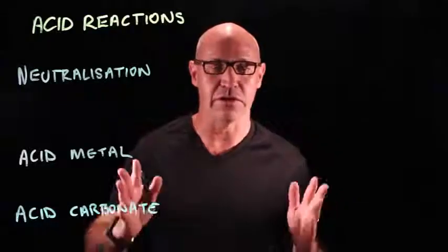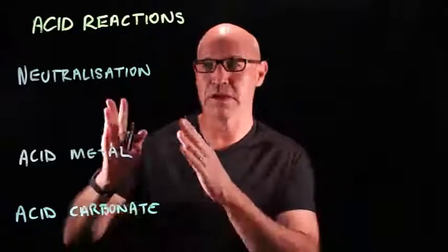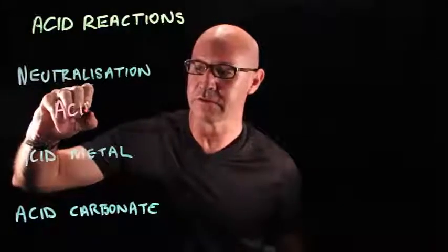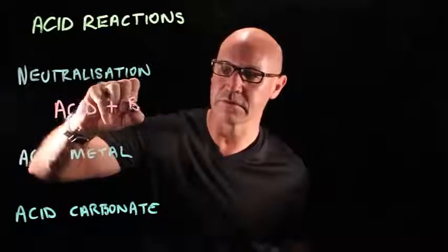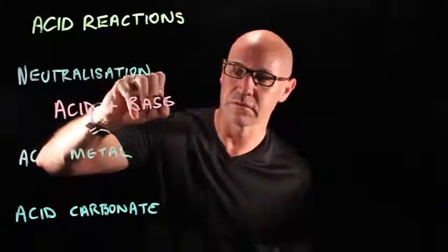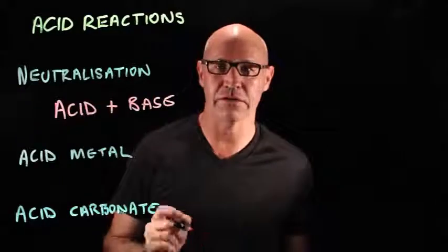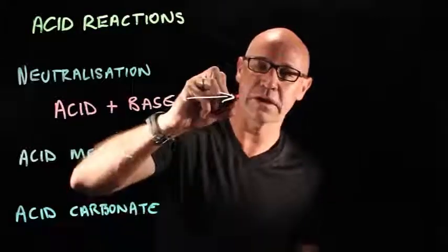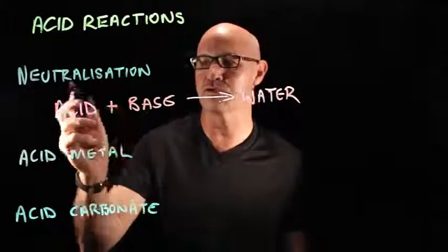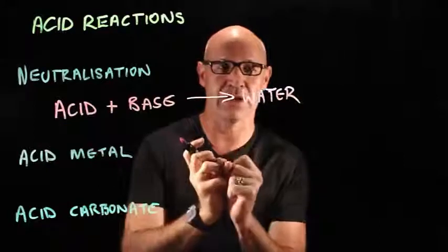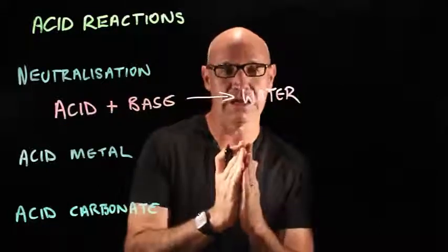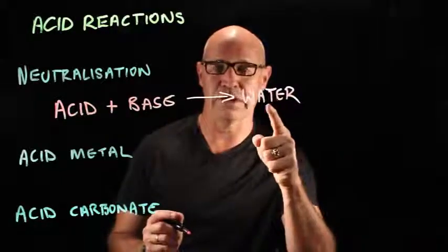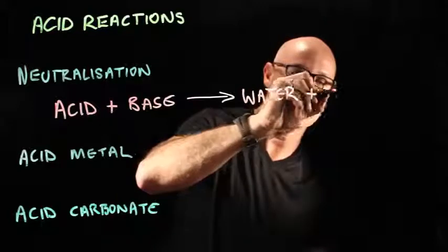There are different types of reactions that involve acids. The first one is the neutralisation reaction, and that is when you have an acid plus a base. For example, you might have hydrochloric acid and sodium hydroxide. You produce water — that's why it's called neutralisation, because if you put an acid and a base together, you neutralise it and get a pH of 7, which is neutral. So acid and base produces water and also produces something called salt.